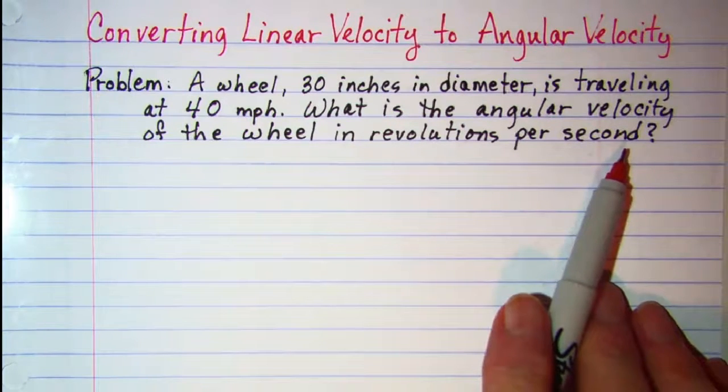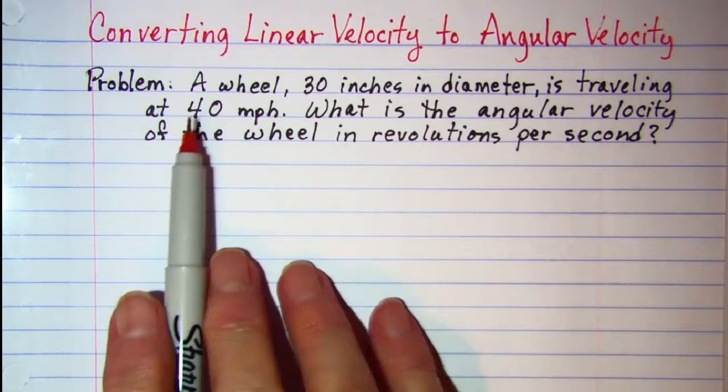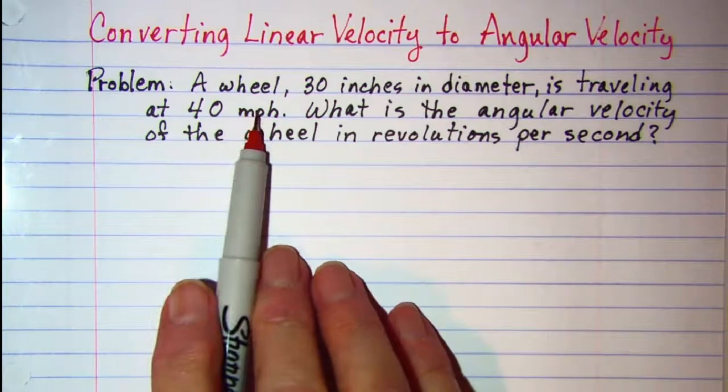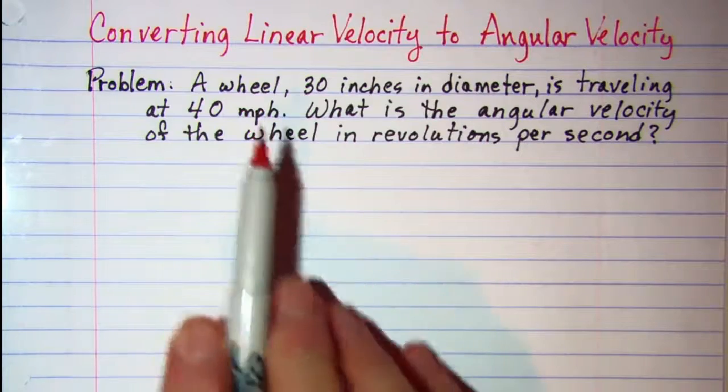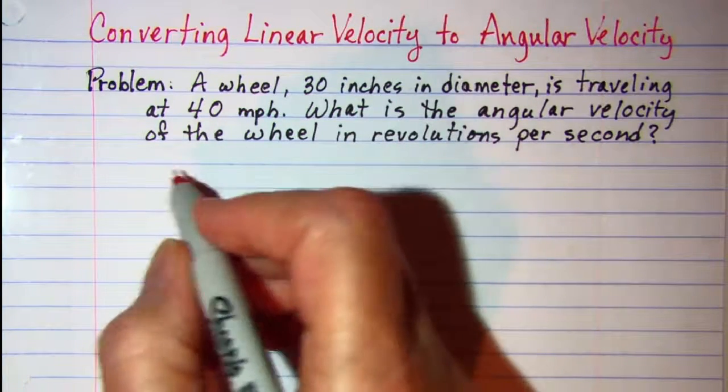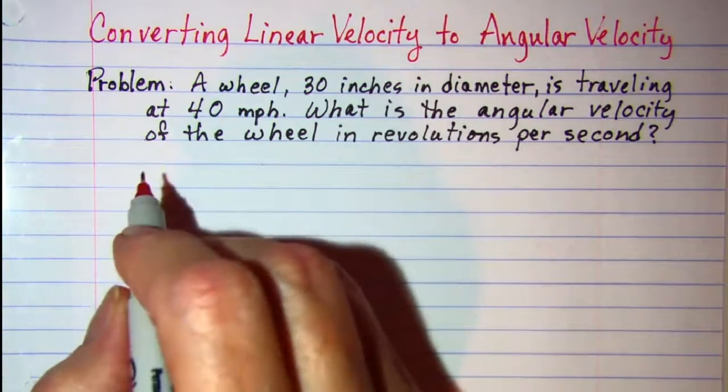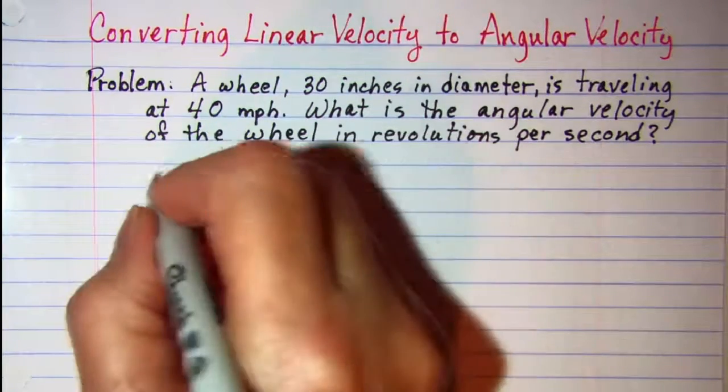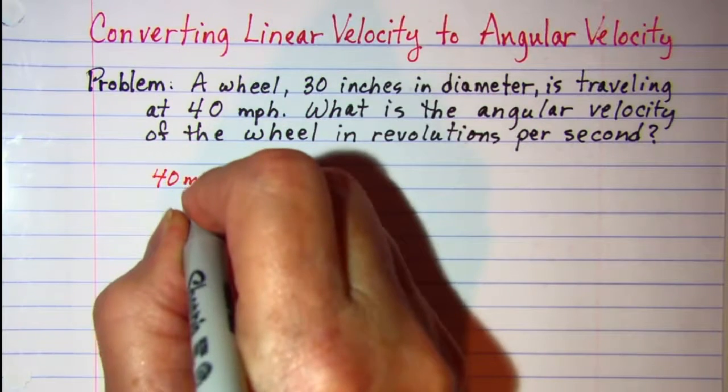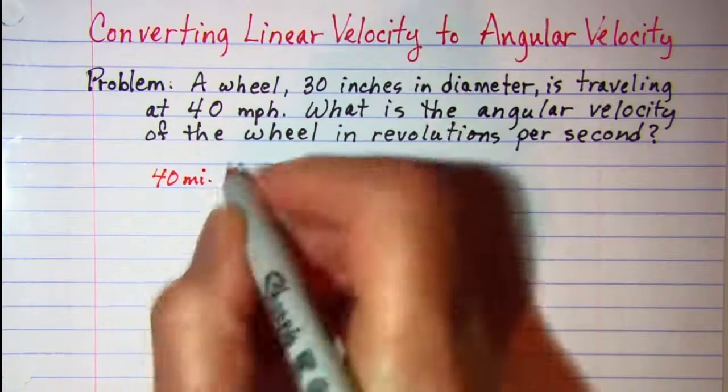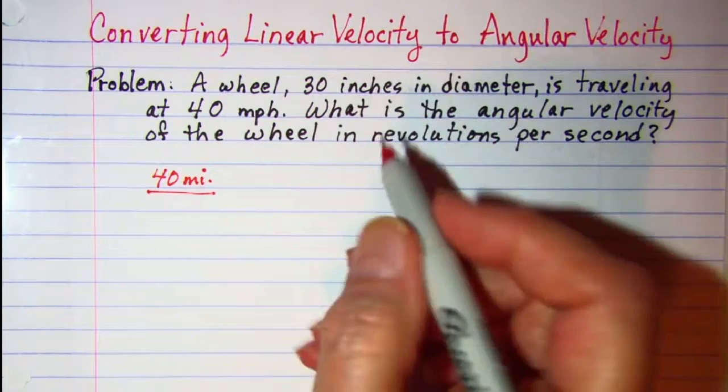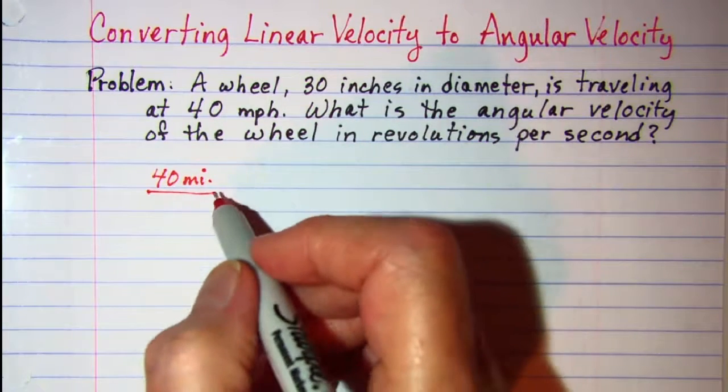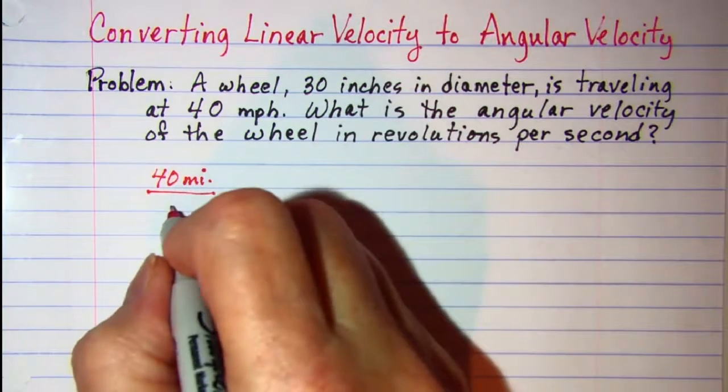So our given information, the rate, is 40 miles per hour. That's what we're going to start with and then we're going to use unit multipliers to convert that. So 40 miles per hour, and per, remember, means divided by, so 1 hour.